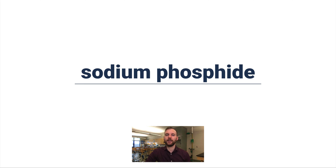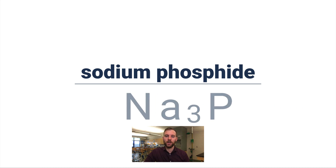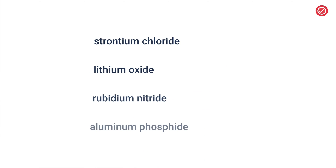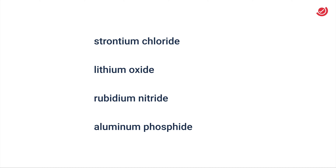Sodium phosphide: Na is in group one so it gets a plus one charge; phosphide is in group 15 so it gets a minus three charge. That results in Na3P. Try these on your own — have a periodic table nearby. Here are the answers: strontium chloride is SrCl2, lithium oxide is Li2O, rubidium nitride is Rb3N, and aluminum phosphide — plus three and minus three, so you just need one of each — is AlP.